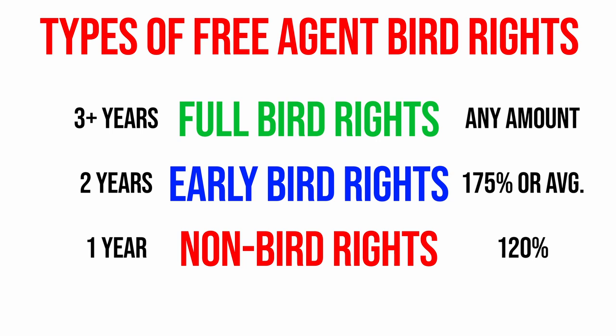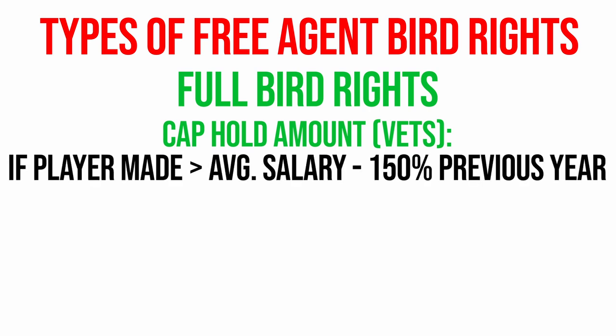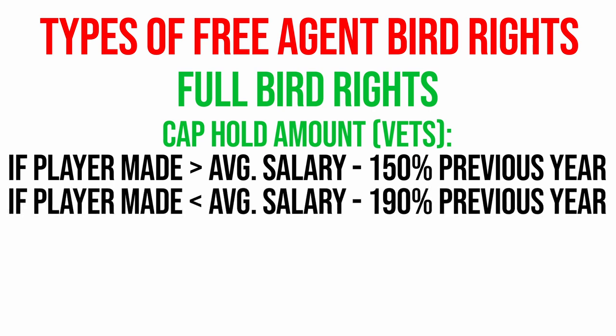For a full bird right free agent, their cap hold is 150% of their previous contract. So if a player made 20 million dollars, their cap hold would be 30 million. The exceptions are it can't be lower than the minimum contract and can't exceed the maximum — so if their max contract was 29 million, then 29 million would be their cap hold number instead of 30 million. If a player made less than the average salary, the cap hold is 190% of their contract — so a player who made 5 million would count as 9.5 million against your cap.